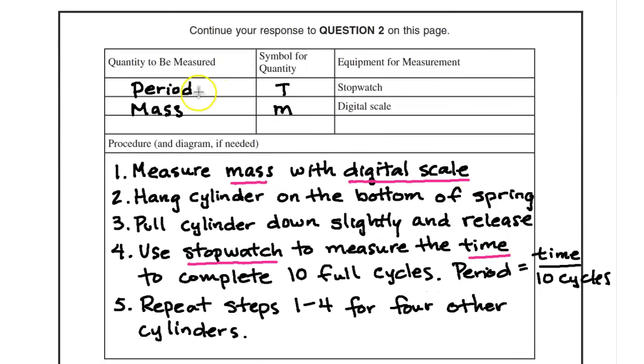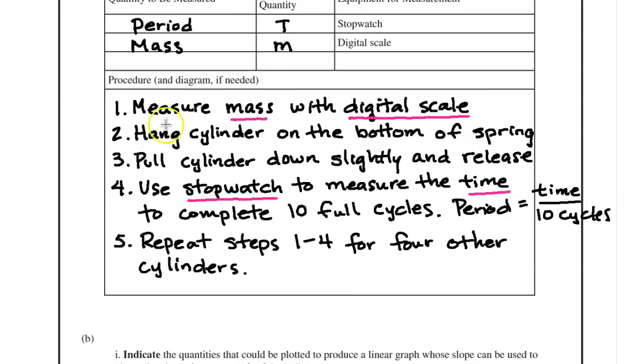So the first thing that they want me to do is to list the quantities that are measured and the symbol for the quantity. And they tell me that I have a stopwatch and a digital scale. The stopwatch, I'm going to use that to measure the period. And the digital scale, I'm going to use that to measure the mass of the cylinders. The symbol for period is capital T, which is pretty standard. The symbol for mass is M. And now I'm going to get to my procedure. So notice that these are numbered. And I'm going to state what tool I'm using to measure each of the quantities.